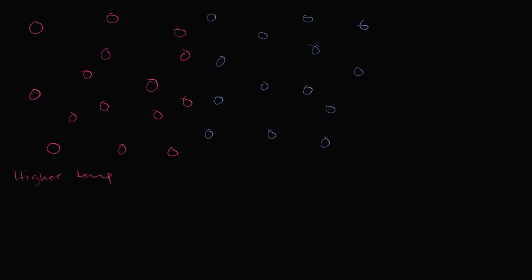Let's say that I have two different gases at two different temperatures that just got in contact with each other. This is my magenta gas right over here, with a bunch of molecules. And this system has just come in contact with this blue gas. Right when we're starting our simulation, our experiment, this magenta gas has a higher temperature and our blue gas has a lower temperature.